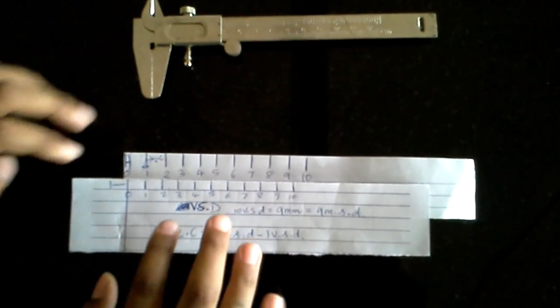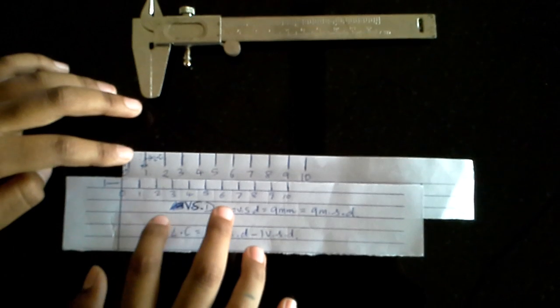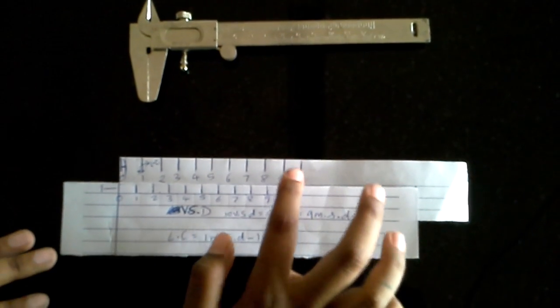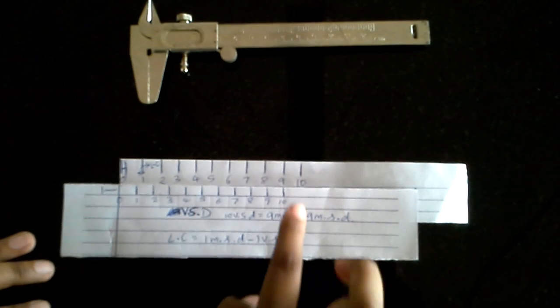So when you do this, now a small gap is also over here, here, here, here, and as you go, it becomes bigger and bigger and bigger. So another thing you should have observed is that when the zero and zero are coinciding, the nine from the MSD and the ten from the VSD are also coinciding. And the gap is a minimum at these two ones and they slowly increase as you increase the number.